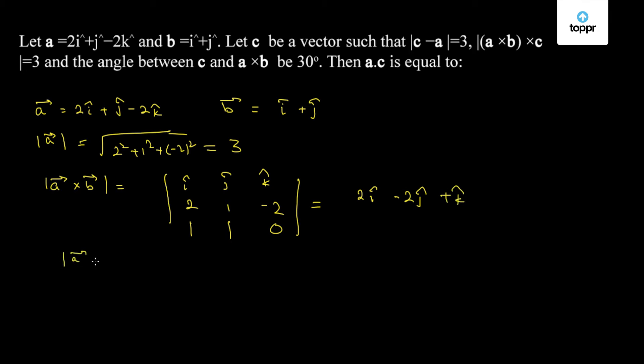The mod of a cross b comes out to be under root of 2 square plus minus 2 square plus 1 square. This comes out to be 3 units again.